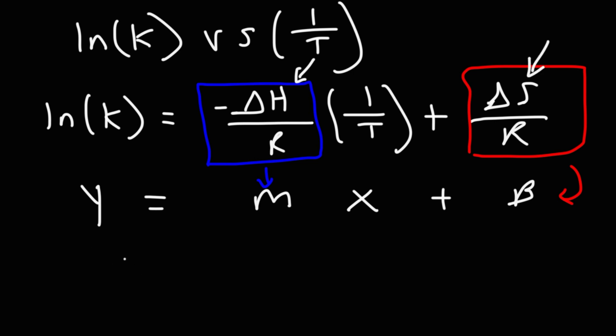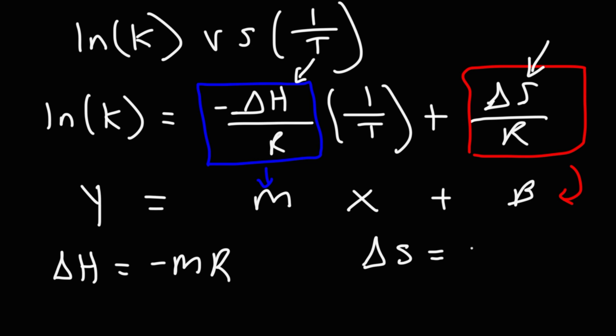Once you determine the slope of the line, the enthalpy equals negative slope times R, where R is 8.3145 joules per mole per Kelvin. Once you know the Y-intercept, you can get the entropy change by multiplying the Y-intercept by R. Then, once you have both delta H and delta S, you can use delta G = delta H – T·delta S to get delta G.